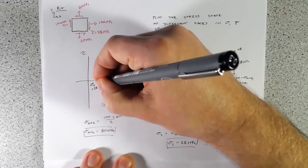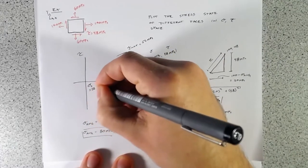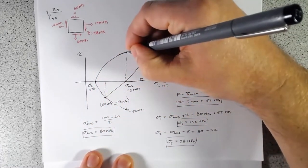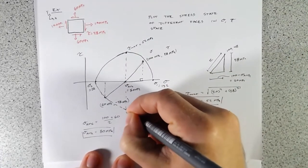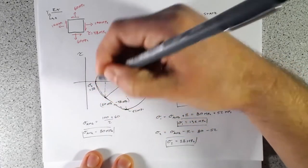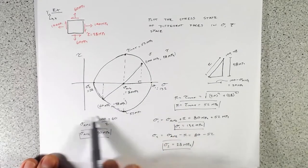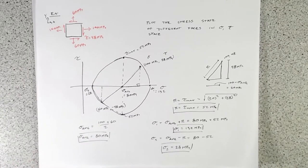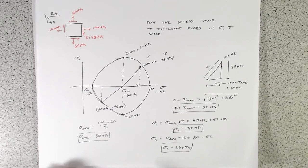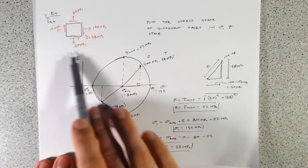Let me freehand this circle as best I can — I'll probably end up with more of an egg shape, but the circle itself matters less. It's these values we care about, and it's the fact that they trace out a circle that we're taking advantage of. We can see quite quickly, with no complex equations or big trig identities, we found the average stress, max shear stress, and principal stresses all from just a single stress state.